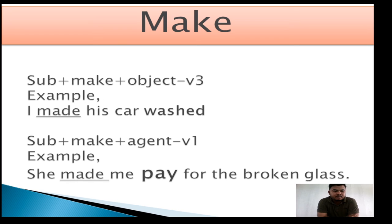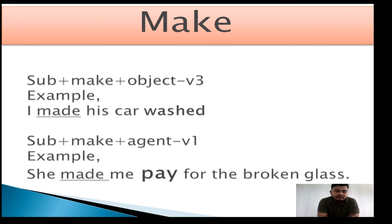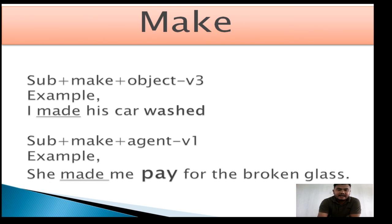Another rule for 'make': Subject + make + agent. If 'make' is followed by an agent — meaning a person — then the verb must be verb 1. For example: 'She made me pay for the broken glass.' Here 'made' is followed by 'me,' which is a person, and the verb is verb 1, which is 'pay.'